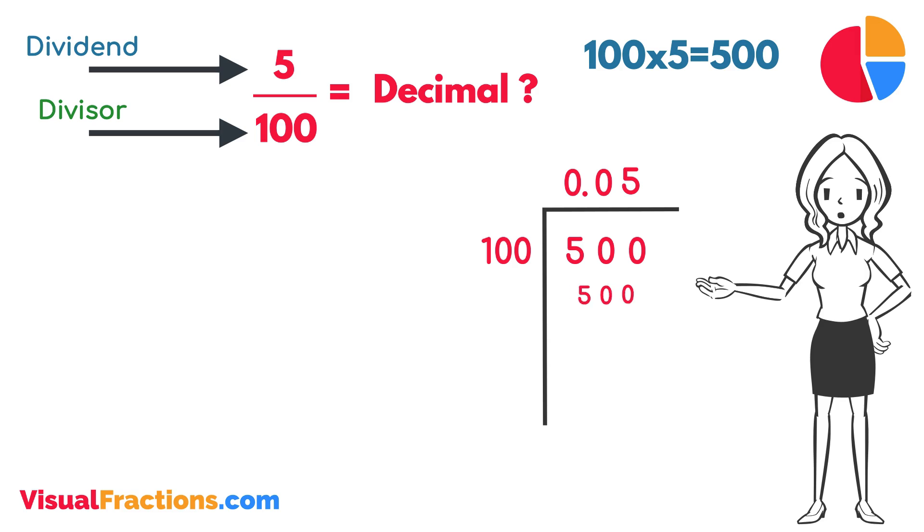Multiplying 5 by 100 gives us 500. When we subtract 500 from 500, we get a remainder of 0.